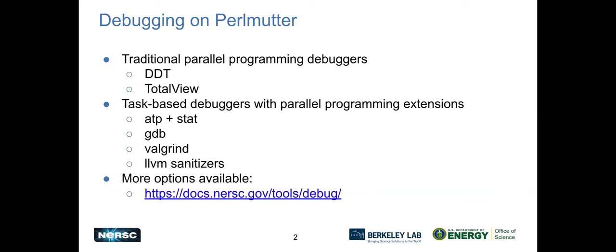I'm going to start with debugging tools. For us, it's typically DDT is the first one that we like to suggest. It's a traditional HPC parallel programming debugger. TotalView is a similar tool. It doesn't have quite as many bells and whistles, but it's been around longer. And then there's several task-based debuggers that are typically used for serial programs, but a lot of them have parallel programming extensions added by either Nvidia or HPE that make them usable for parallel programming models. And we also have a bunch of other options that are discussed on our debug tools documentation.